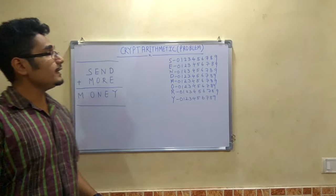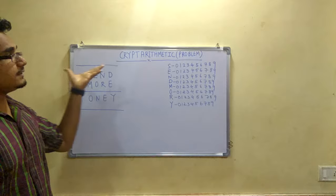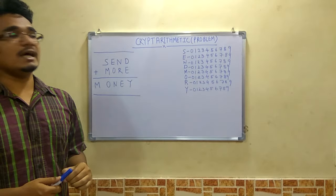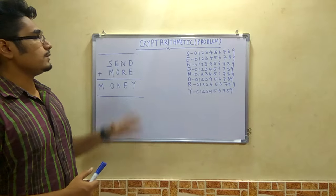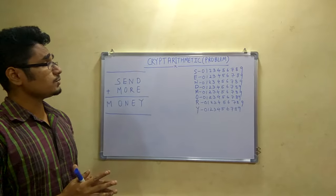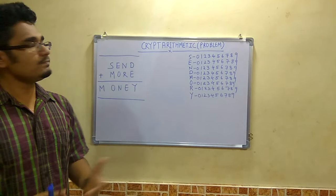Hello viewers, today we see the problem on arithmetic, that is the cryptarithmetic problem. Now this problem is classified under artificial intelligence. So this problem is a full trial and error based problem. This will take a considerable amount of time to solve such kind of problems.